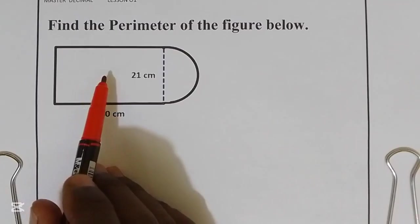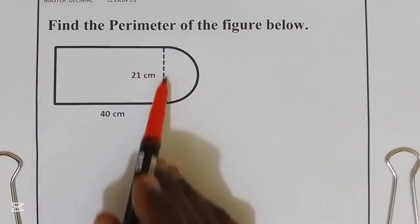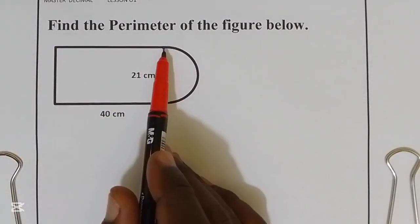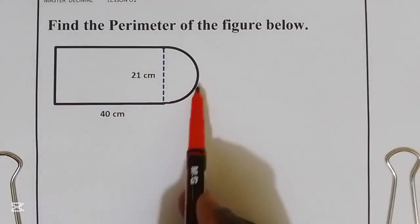Below is the figure that is made by a rectangle and a semicircle. Perimeter of this figure is the same as total distance around the figure.